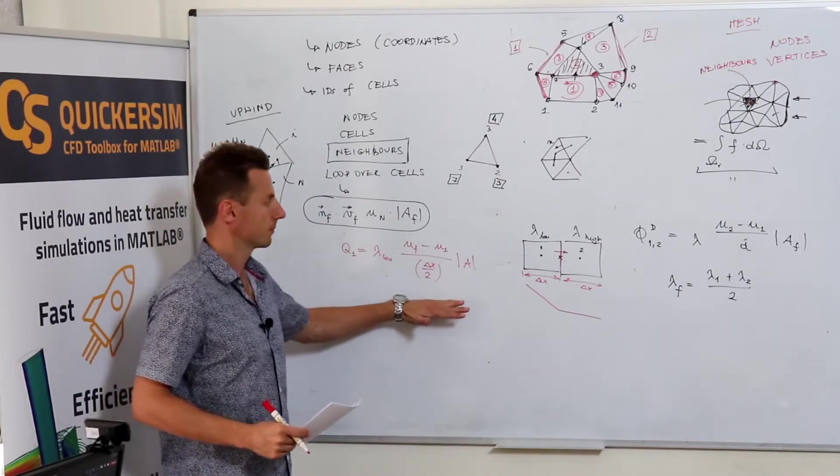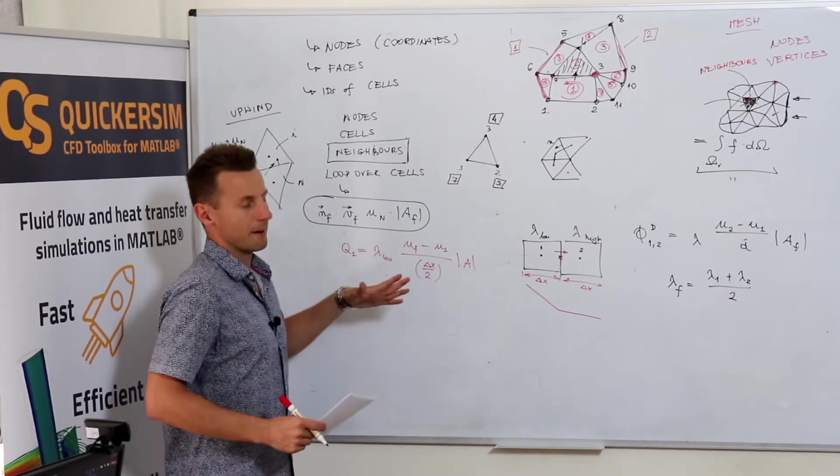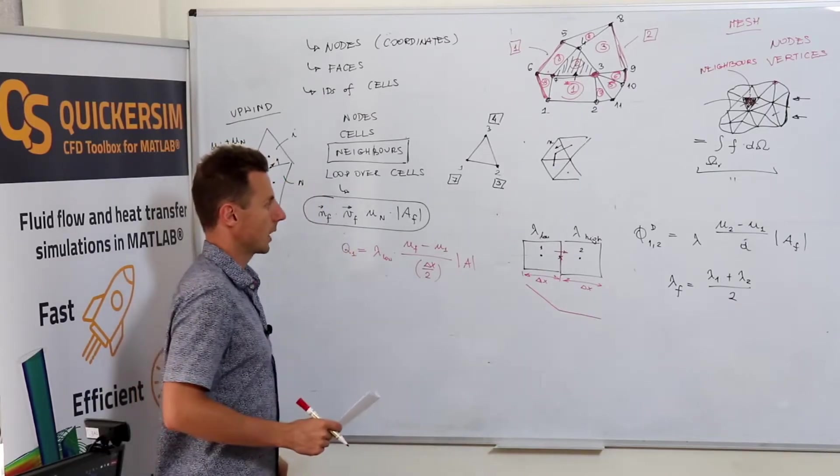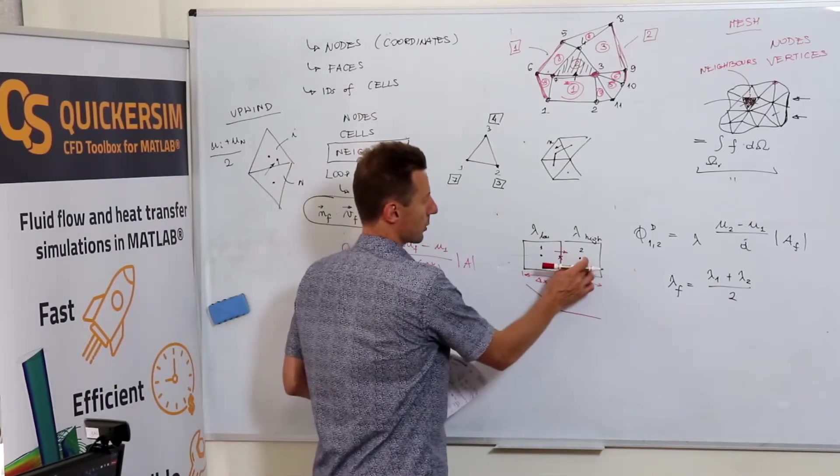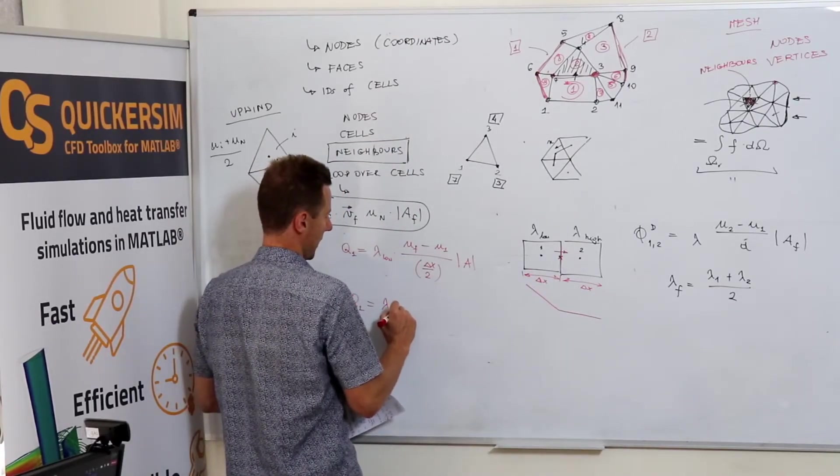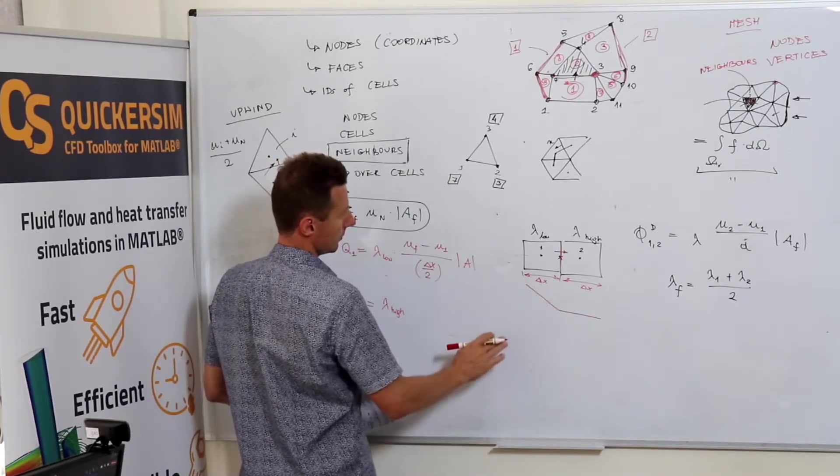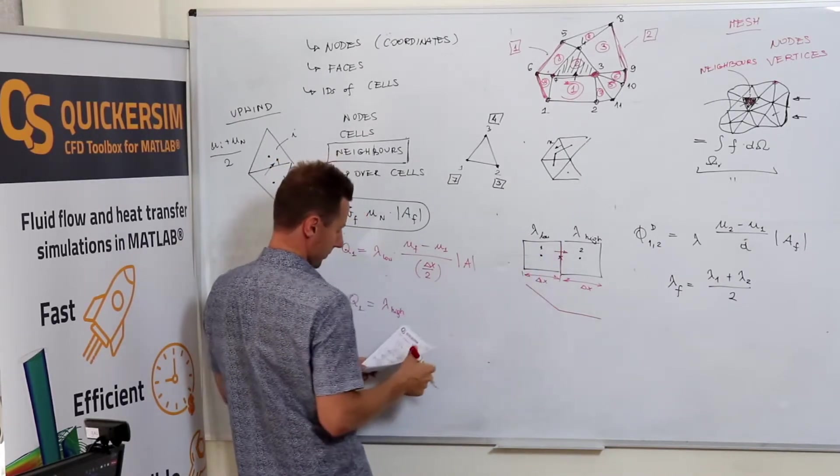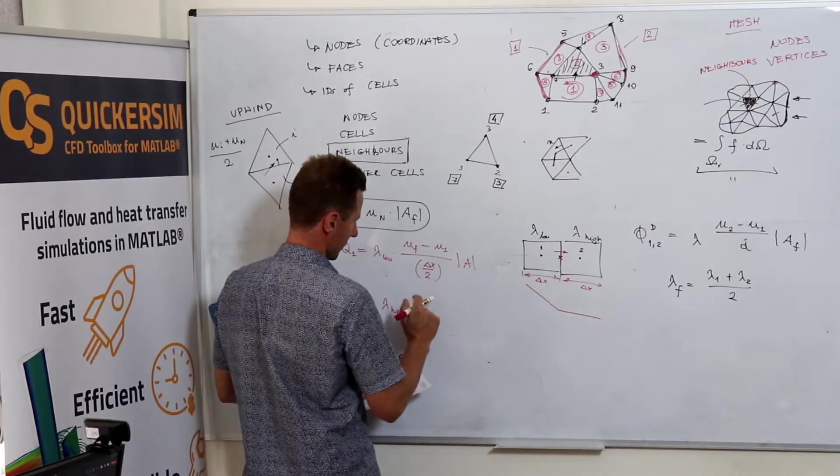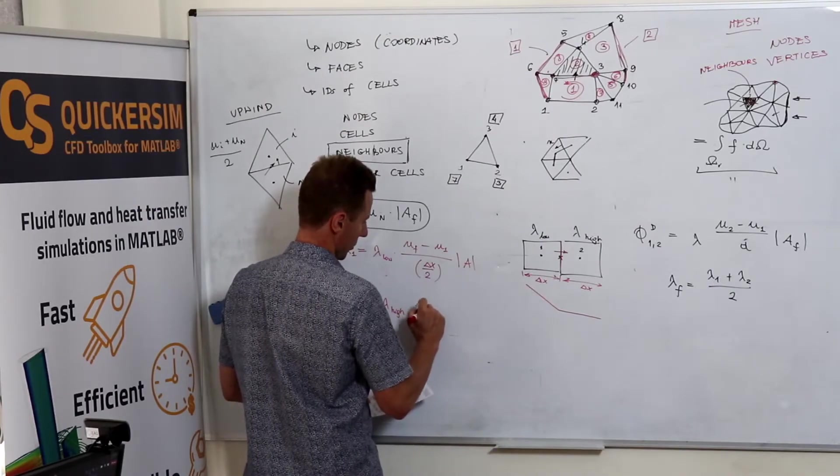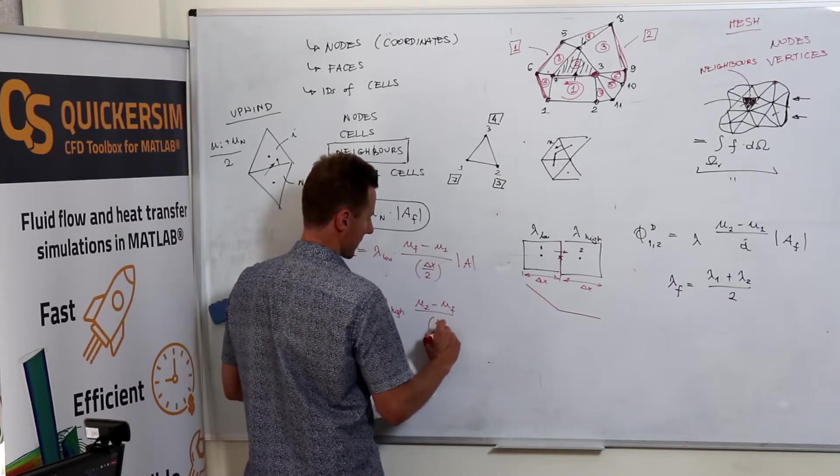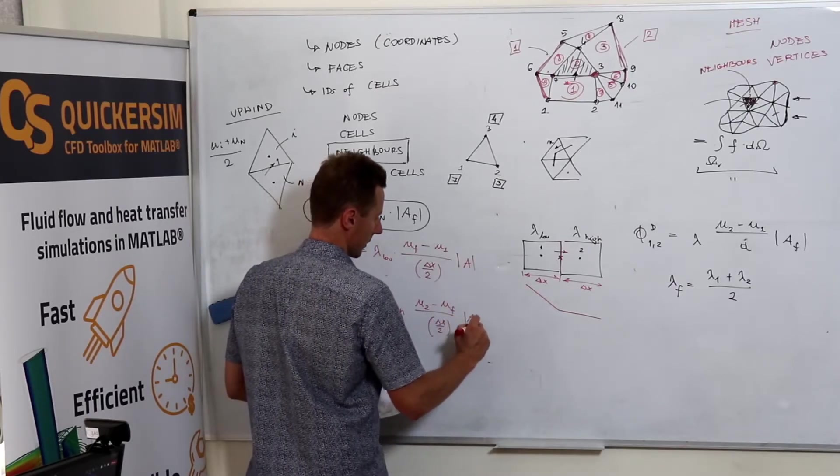And then I think you need to add a minus before... Yeah, that's right. I just want to calculate the magnitude. Okay? What would it be from the perspective of the other cell? Q2 is lambda high times U2 minus U face divided by delta x half times A.